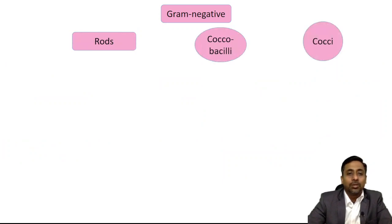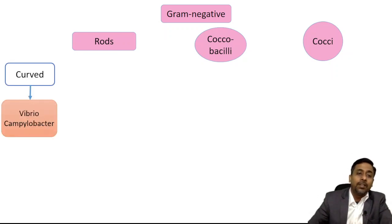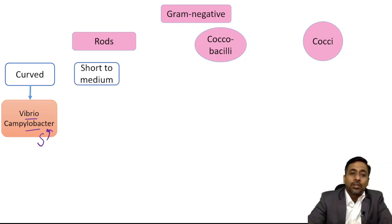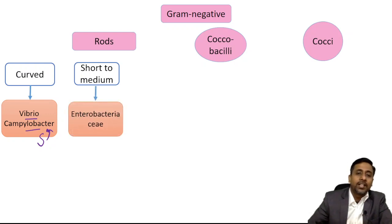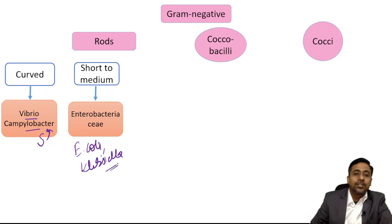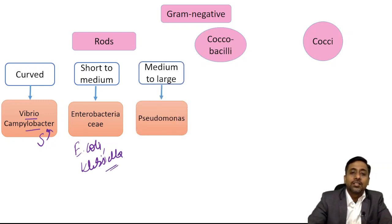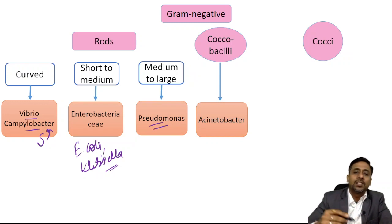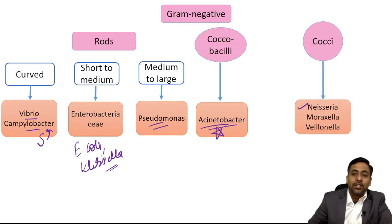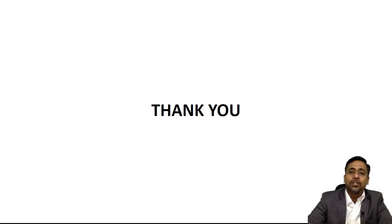Gram-negative rods may be rod-shaped, coccobacilli, or cocci. Curved rod-shaped organisms include Vibrio (usually curved) and Campylobacter (which may be curved or S-shaped — S-shaped bacteria is Campylobacter). Short to medium rods are mostly seen in Enterobacteriaceae such as E. coli and Klebsiella; medium to large is commonly Pseudomonas. For gram-negative coccobacilli, the most common is Acinetobacter. Gram-negative cocci most commonly include Neisseria, Moraxella, and Veillonella.